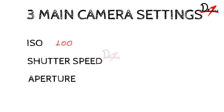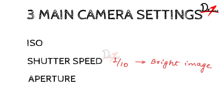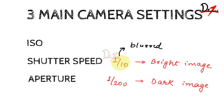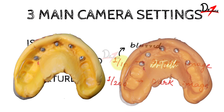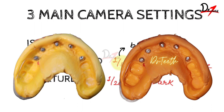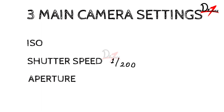The shutter speed is the amount of time the camera shutter is open. The longer it is open, the brighter the image — a slow shutter speed of 1/10 gives a brighter image, while 1/200 gives a darker image because less light enters. The drawback of a slow shutter speed is motion blur, as you can see in the example picture. An image captured with a fast shutter speed is sharp. We can keep our shutter speed at 1/200 of a second.